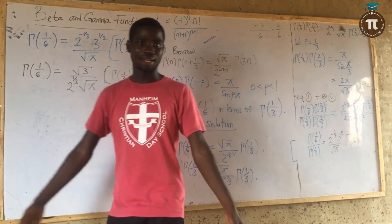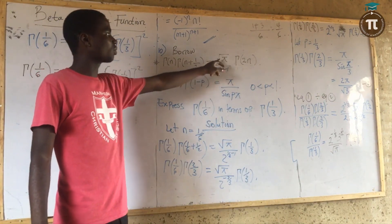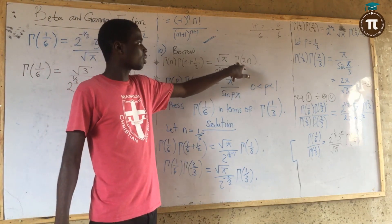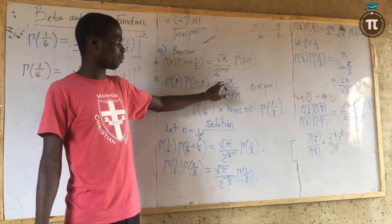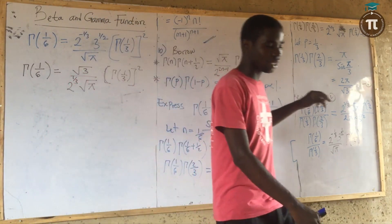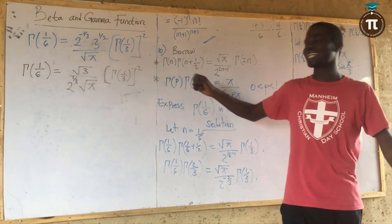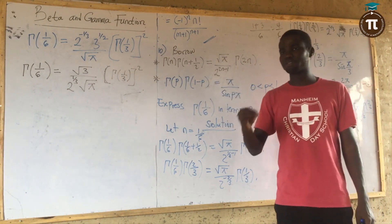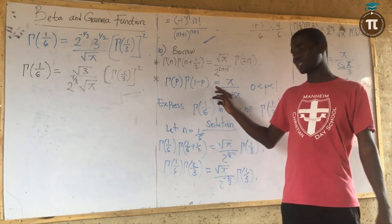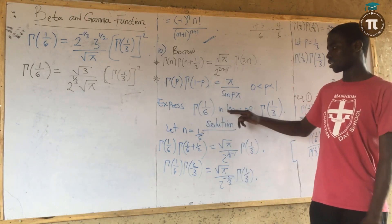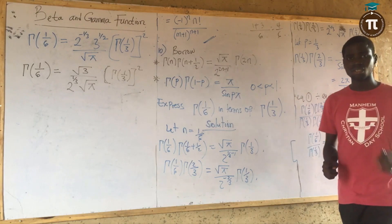Now let me explain question 10. They ask us to use two important formulas we haven't introduced yet: the duplication formula, gamma of n times gamma of (n plus one half) equals root pi over 2 raised to power (2n minus 1) times gamma of 2n; and the reflection formula, gamma of (1 minus p) times gamma of p equals pi over sin(p pi). These are very important for evaluating beta and gamma functions.